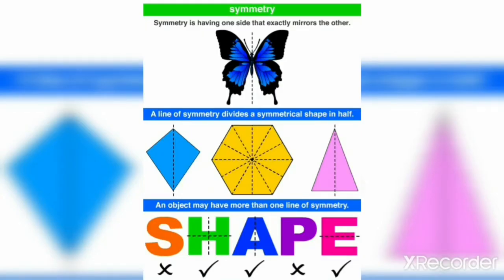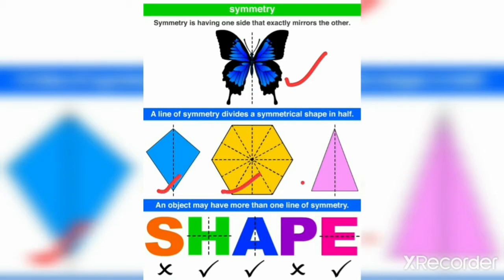Here some more examples are there. Symmetry is having one side that exactly mirrors the other. Here a butterfly is a symmetrical object. Here we have some more symmetrical objects.